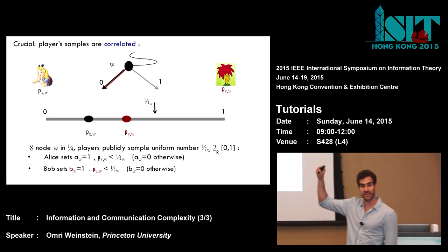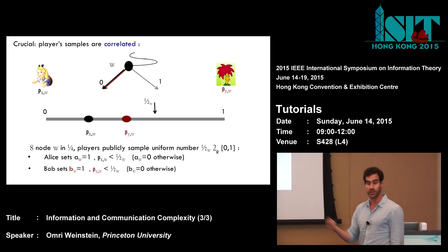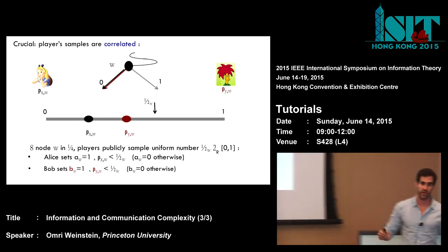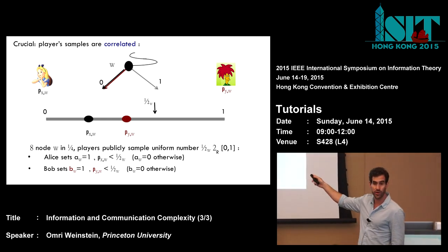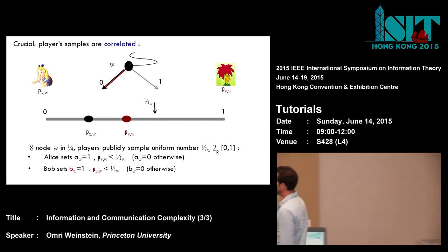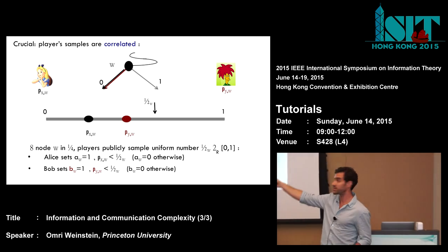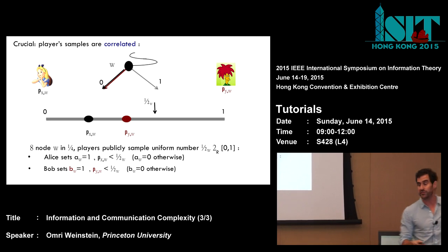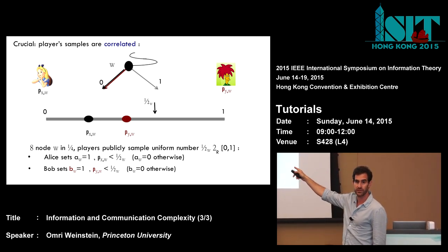Suppose the players have sampled the correct transcript up to some node W. This is how they sample the next node. Alice has some distribution px in mind — suppose W is an odd node so she has the correct distribution — and Bob has some prior distribution p(y). The players draw a uniform number rho for each such node of the protocol, just a uniform number between zero and one, and each player sets their next message: the guess is going to be 1 if the dart exceeds their threshold. If the dart fell to the left of both players' estimates, both will guess the next transmitted message is zero.